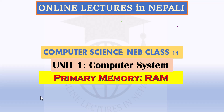In Class 11 Computer Science, Unit 1 covers memory. In the previous tutorial, we learned that memory is divided into three categories based on technology: semiconductor memory, magnetic memory, and optical memory. Further, based on common characteristics like speed, volatility, capacity, and accessibility, memory is divided into primary and secondary memory.